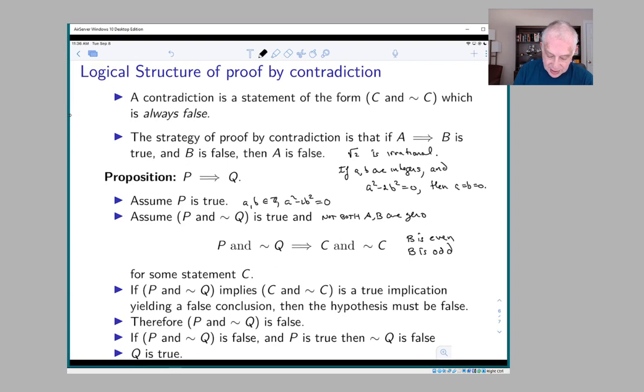Well, remember that not Q was that not both a and b are 0, and the P was that a squared minus 2b squared equals 0. So if P and not Q is false and P is true, meaning that we have a solution a squared minus 2b squared equals 0, then it must be the case that not Q, which was not both a and b are 0, must be false. So Q must be true.